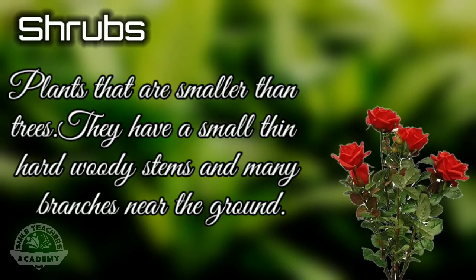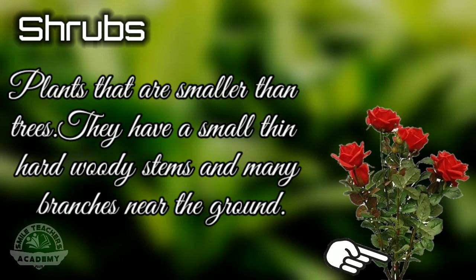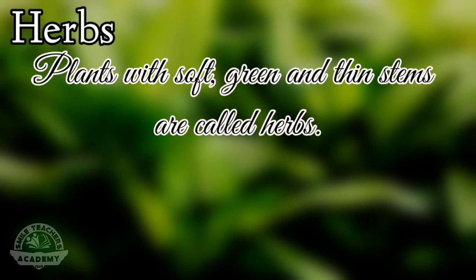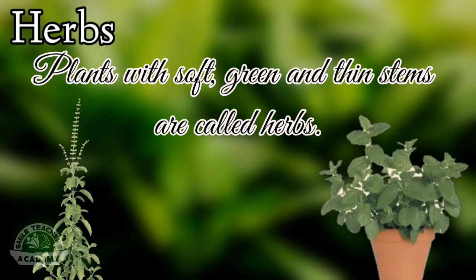Shrubs — plants that are smaller than trees. They have a small, thin, hard, woody stem and many branches near the ground. Example: rose, hibiscus. Herbs — plants with soft, green and thin stems are called herbs. Example: tulasi and mint.